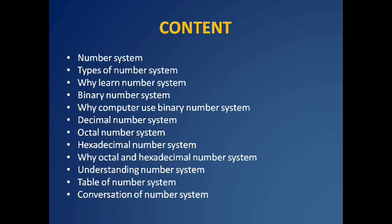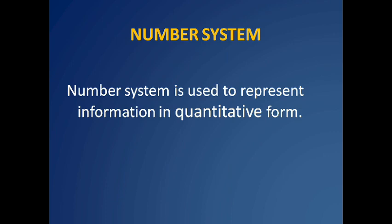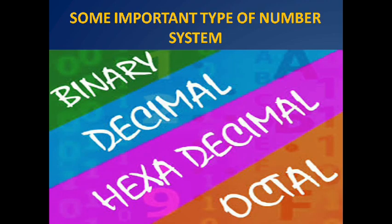First we will discuss about the number system. A number system is defined as a writing system to represent numbers in different ways — that is, we use different symbols and notation to represent numbers. There are four types of number system: binary, decimal, hexadecimal, and octal.